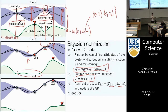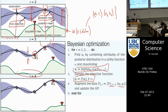So provided I know this acquisition function u, I keep iterating: start with two points, u tells me the next point to try, I add it to my set, refit the GP, recompute u, use u to select the next point, and so on. If I iterate — fit the GP, recompute u, maximize u — I'll converge to the optimal with some guarantees.